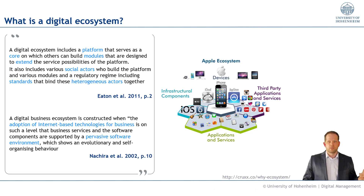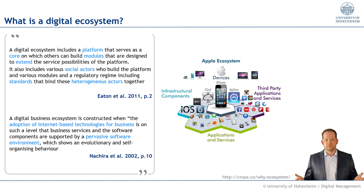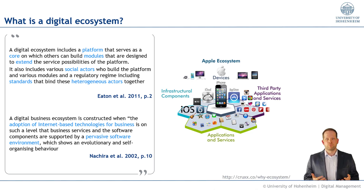A digital ecosystem also includes various social actors who build the platform and various modules. One social actor is Apple, who designed and controls this ecosystem, but then you have many other actors — especially third-party app providers. Somebody needs to control this, so that's the last part of the definition: the regulatory regime, including standards that bind these heterogeneous actors together. The organization controlling this ecosystem is Apple; they set the regulatory regime. There are many rules: which functionalities you're allowed to implement in apps, under which conditions you can publish them in the App Store, and which share of revenues Apple takes for providing the platform.